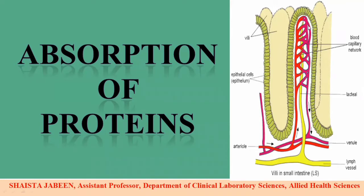In these villi there are numerous blood capillary networks involved in absorption. The simplest food particles will be absorbed, crossing the intestinal lining and entering into the blood capillaries. From there, they are taken into the blood circulation to be delivered to specific targets and organs.